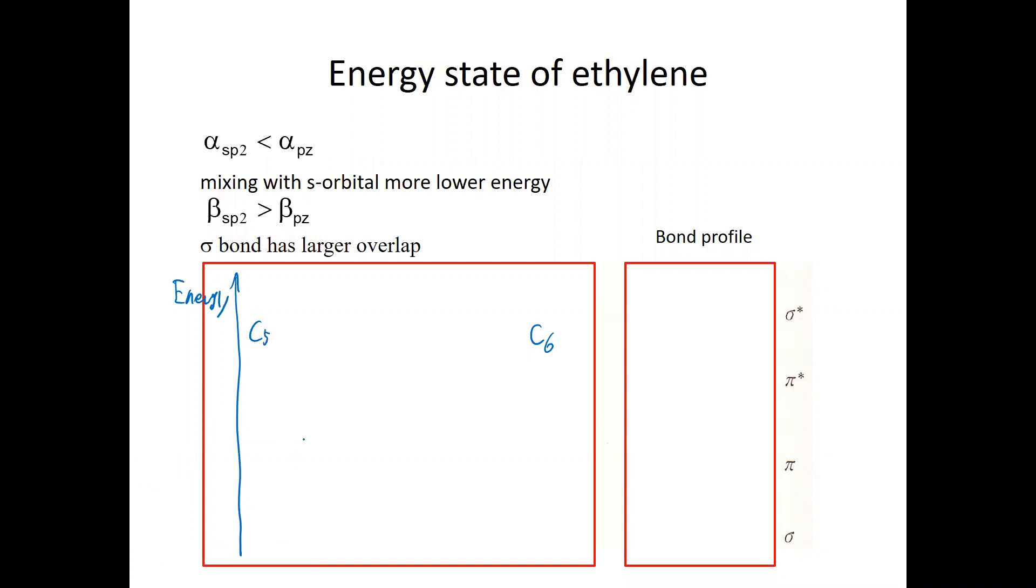Okay, then here are the things. So at first, each carbon side has atomic orbital level. And each carbon has two electrons each, at each sp2 orbital and the pz.